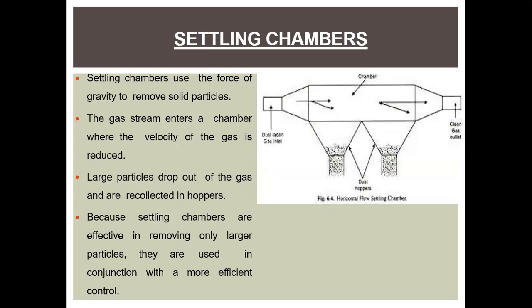The first particulate matter control technique for stationary sources is the settling chamber. As shown in this figure, a horizontal flow settling chamber uses the force of gravity to remove solid particles. The gas stream enters a chamber where the velocity is reduced, and large particles drop out of the gas and are collected in hoppers. Because settling chambers are effective only in removing large particles, they are used in conjunction with more efficient control devices.